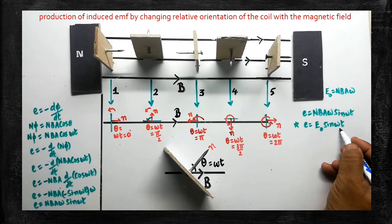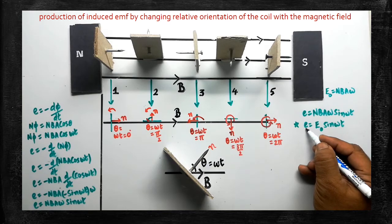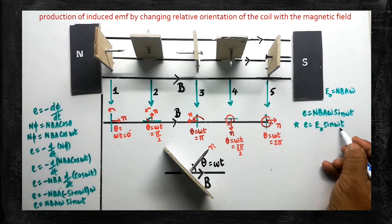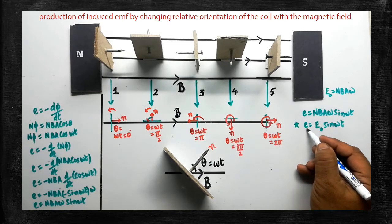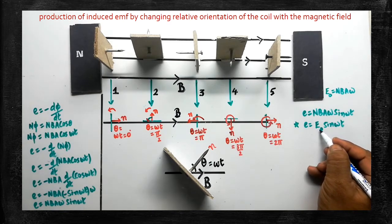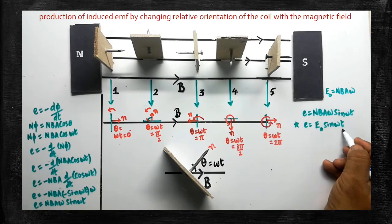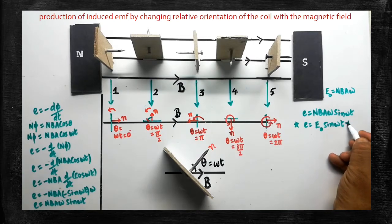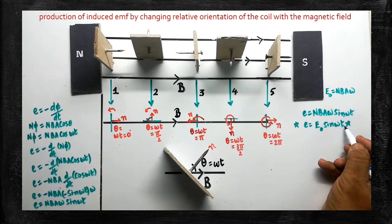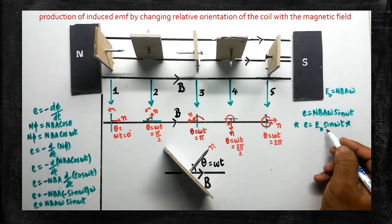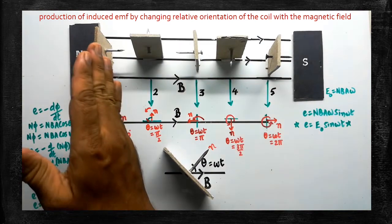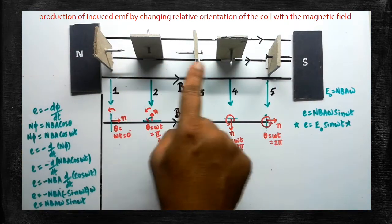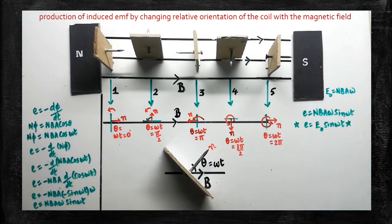Don't forget the equation E = E₀·sin(ωt). Using this expression, we are going to find the magnitude of EMF at five different positions. The coil is going to be rotated, and at each of these five positions we will measure the induced EMF.